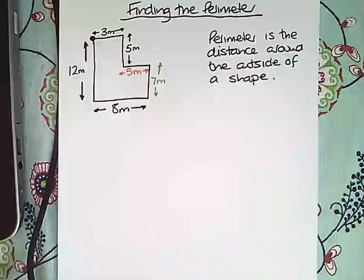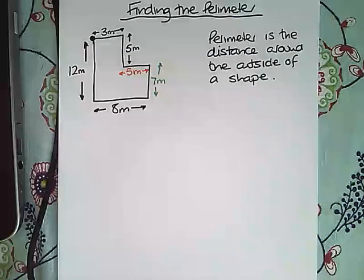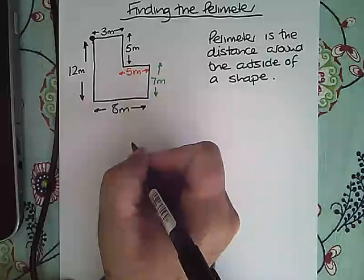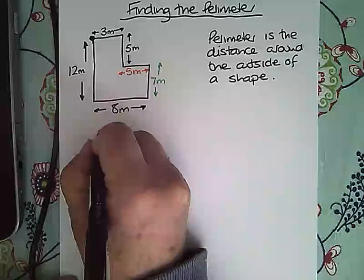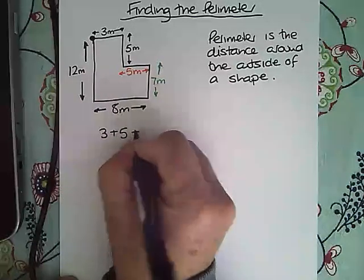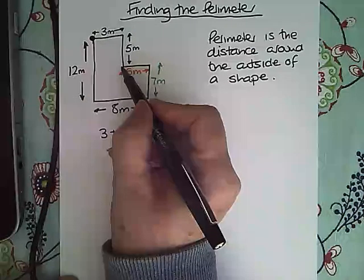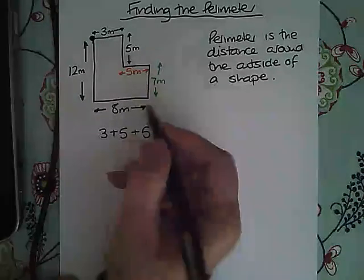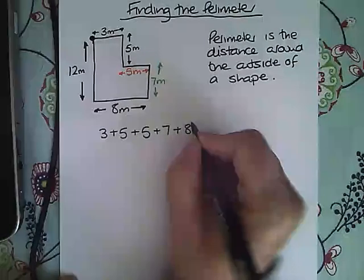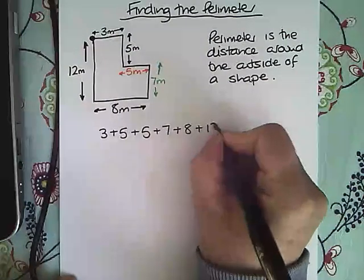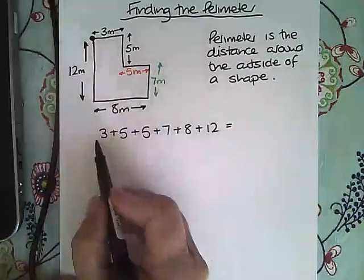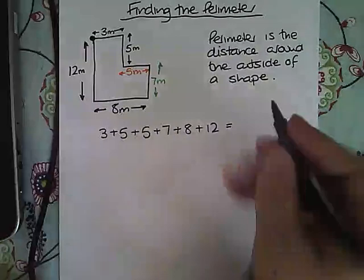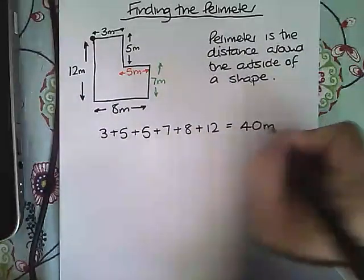Then if we are going to work out the perimeter, we need to add all of our sides together and we must write that down so that we show we know what we're talking about. So the 3 plus the 5, I'm walking along here, down to this 5, along to this 5, down the 7, across the 8 and up, back to my start point by adding 12. So 10, 13, 20, 28, 38, so that becomes 40 metres in total.